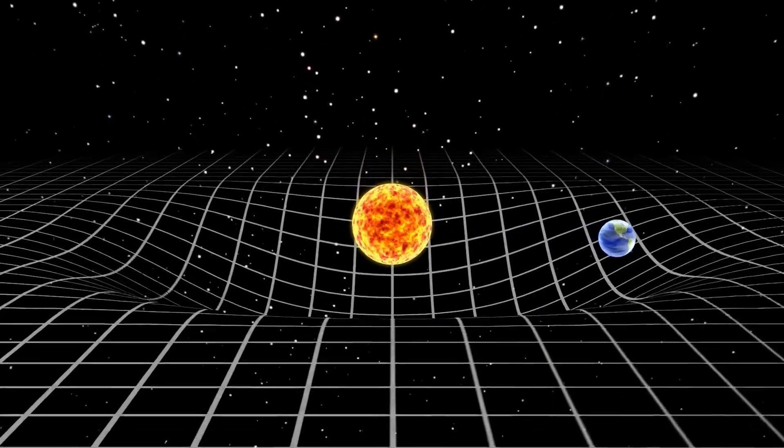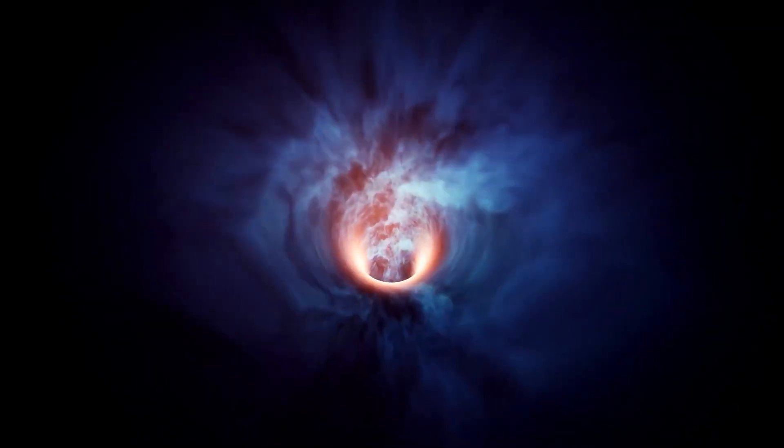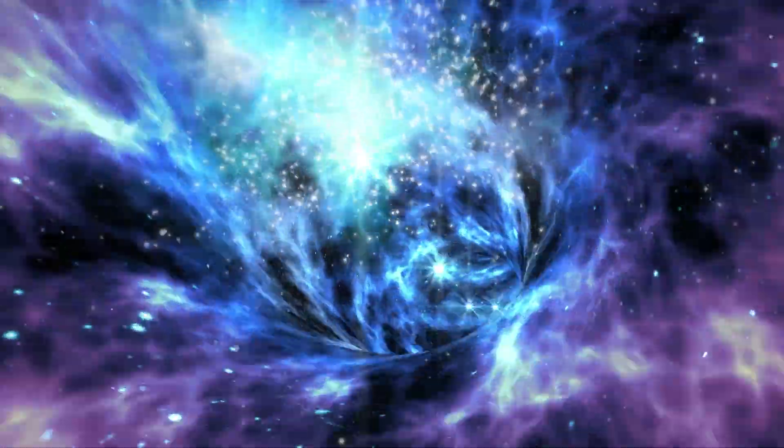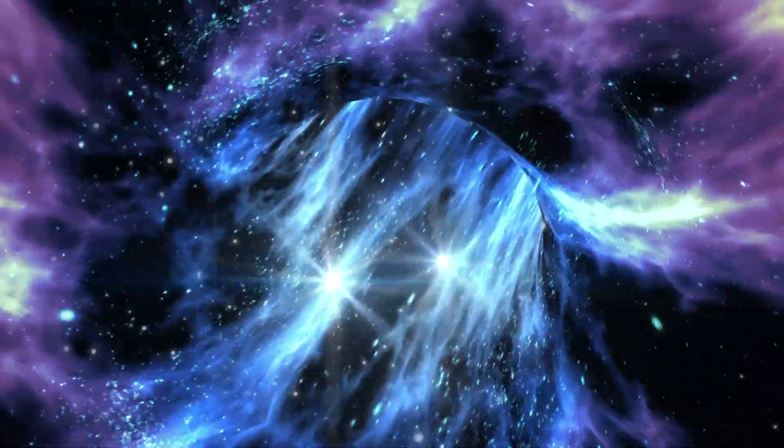In the context of Einstein's theory of general relativity, these wormholes serve as shortcuts through both space and time. If wormholes exist, are traversable and stable on a substantial scale, the prospect of constructing a time machine becomes conceivable.